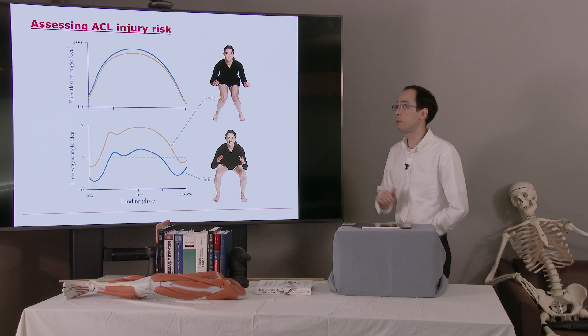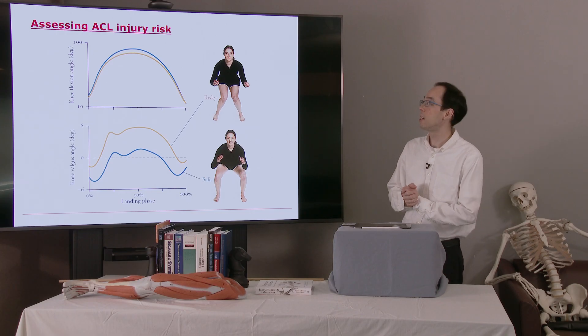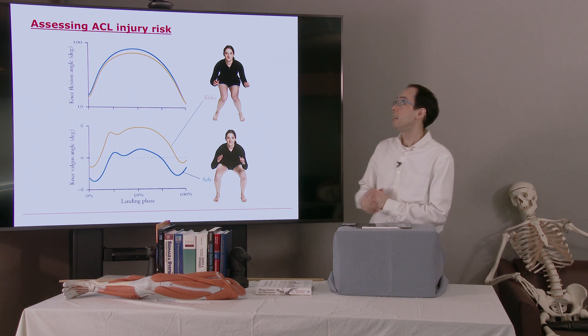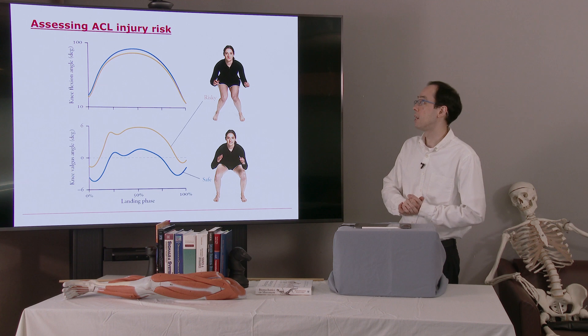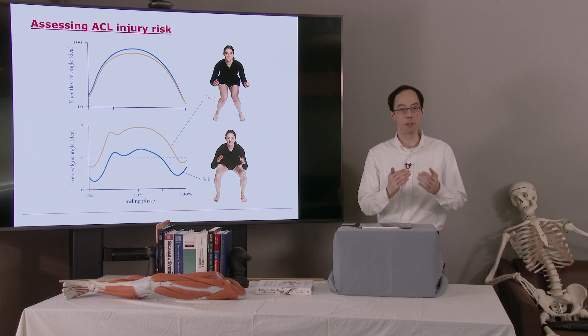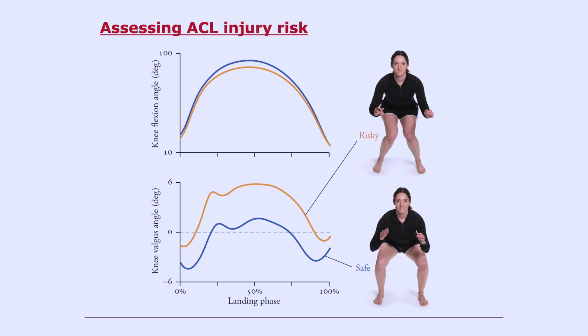Here's one example of what we can do just with skeletal joint angles. So this was a study to look at anterior cruciate ligament injury risk, or the risk of injuring your ACL. The ACL is a ligament that prevents your tibia from moving forward relative to your femur, and depending how you land, you might put more or less stress on the ACL. So here's a risky sort of landing pose. Here's a safer pose.